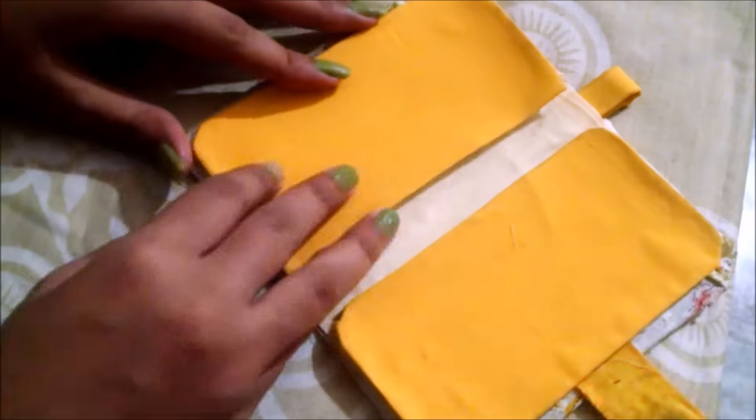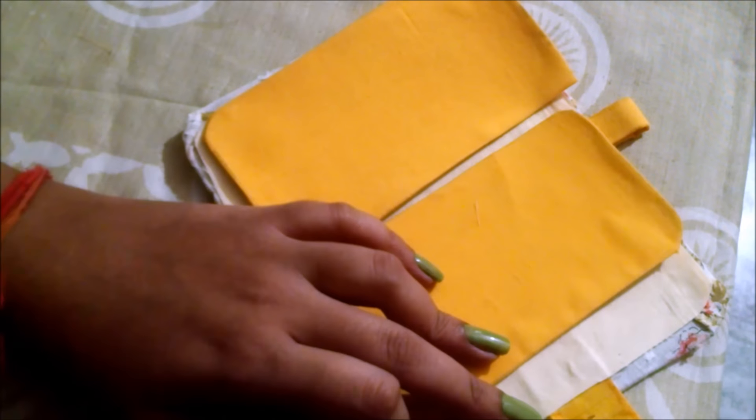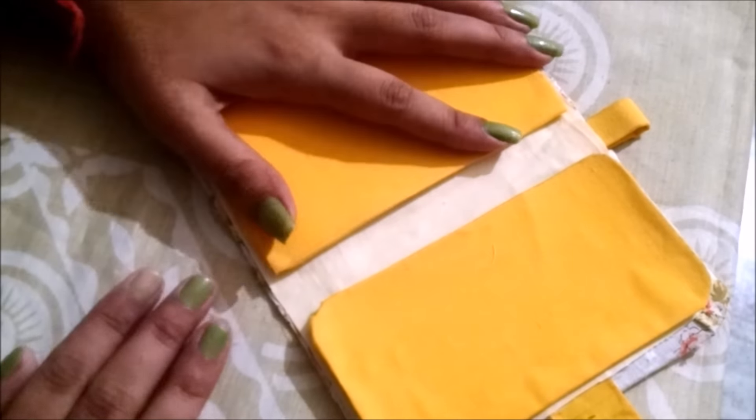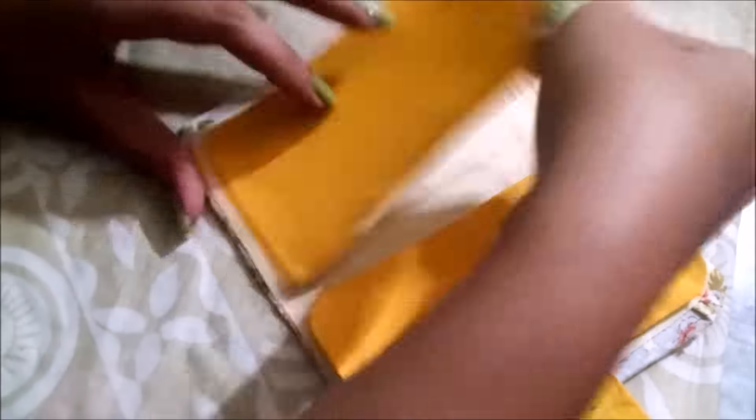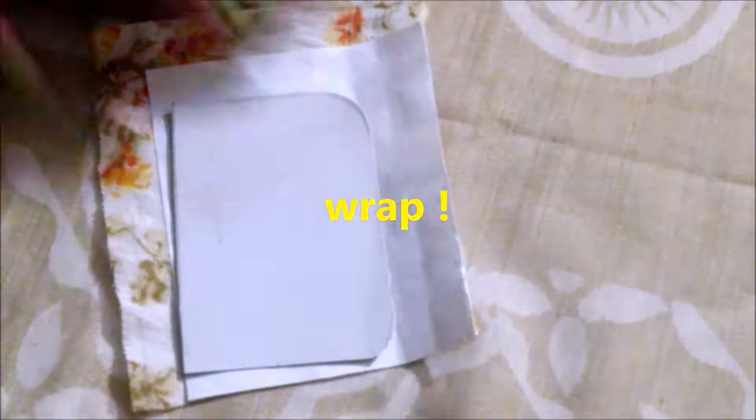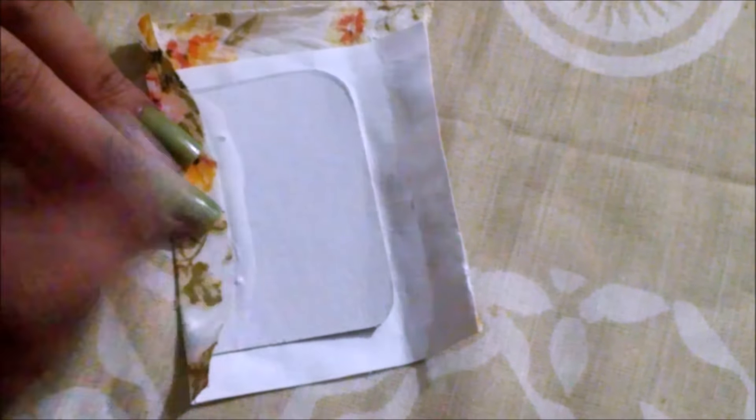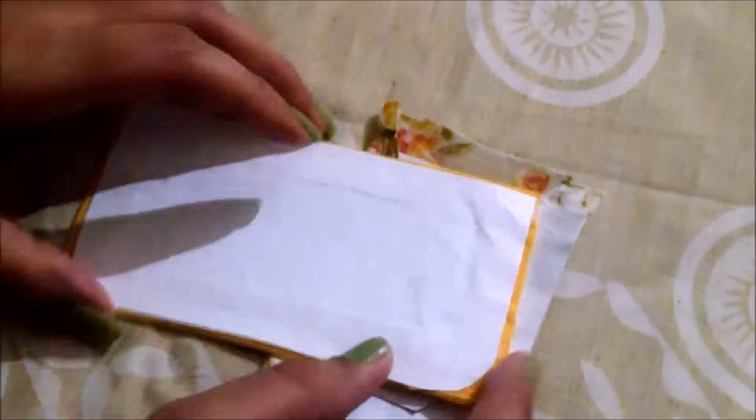Take the other two template and wrap it with another cloth. Now take the pocket template and wrap it with the first cloth we used. And then wrap it around the yellow template.